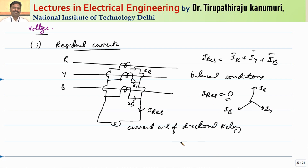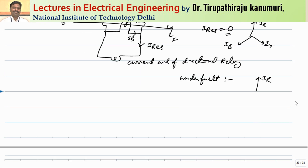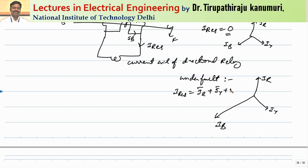Under fault conditions — let us assume the fault has happened in the B phase — the values of IR and IY will be nearly the same, but there is a displacement of IB. So automatically, I-residual, which is the sum of IR plus IY plus IB, is not equal to zero. As the residual current is not equal to zero, your current coil will be actuated and accordingly your relay will operate.